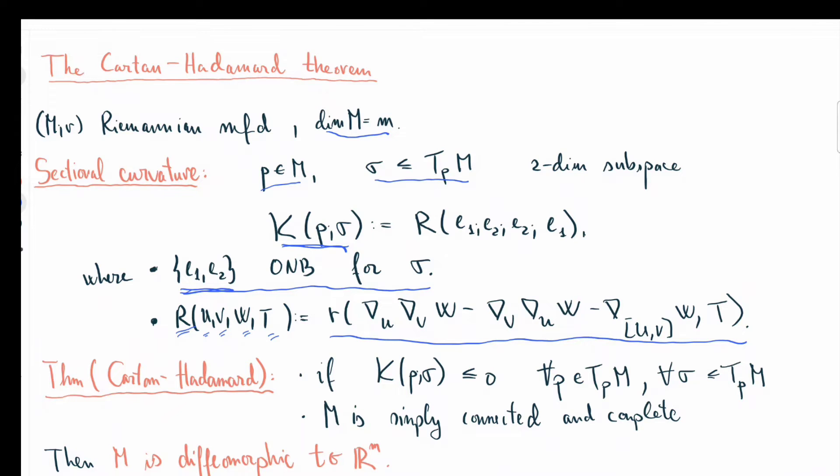Now with this we can state the Cartan-Hadamard theorem, which simply says that if your sectional curvatures are always non-positive, in other words, if M is non-positively curved, and it happens to be simply connected and complete, then M is always diffeomorphic to a copy of Euclidean space. This is quite a remarkable result.